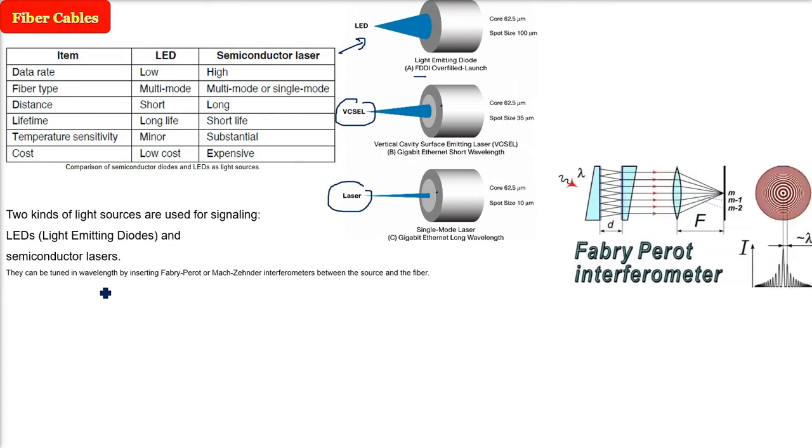They can be tuned in wavelength because the wavelength has to be tuned, since everything is about light. Total internal reflection, everything is dependent on light. They can be tuned in wavelength by inserting certain interferometers. It can be Fabry-Perot or it can be Mach-Zehnder interferometer. And this has to be placed between the source and the fiber.